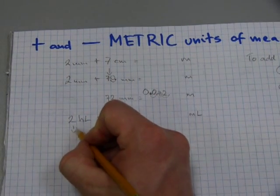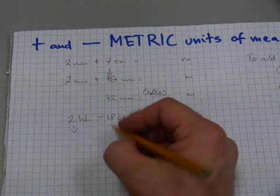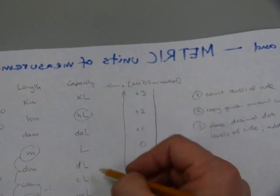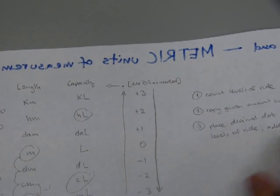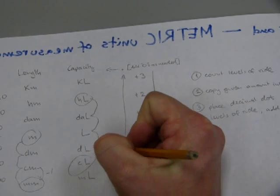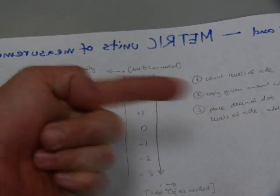First off, we're going to need to make out of these 2 hectoliters, centiliters. And to do that, the hectoliters can be found there. And the centiliters are found there. And we're going for a ride one, two, three, four levels down. Four levels down, so we're moving the decimal dot that way, four spots.